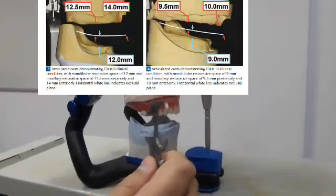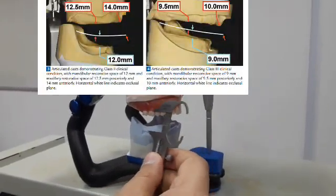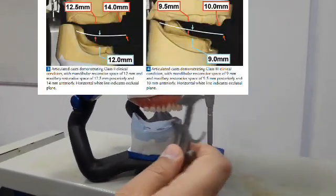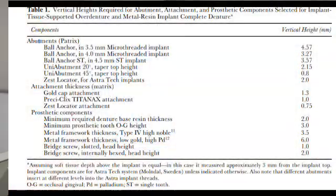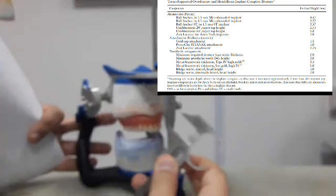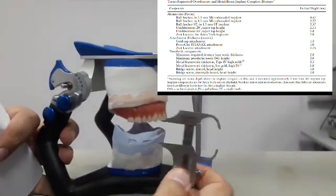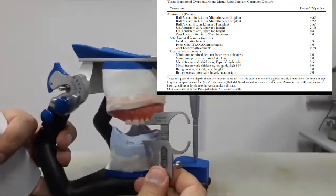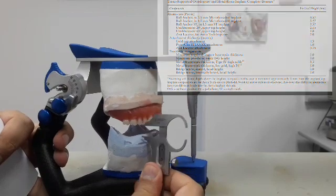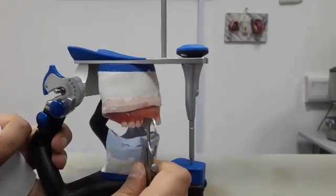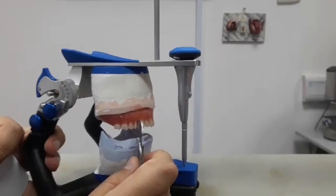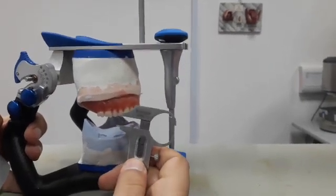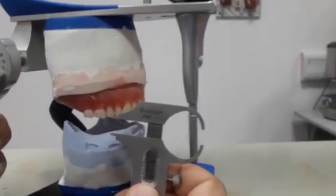We will use a gauge here to measure this space. If I am going to place implants in the canine area, I have to measure this space to see what is the available space. From the occlusal plane to the supporting tissues.